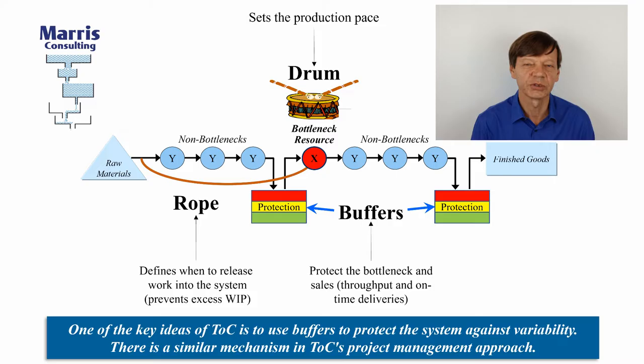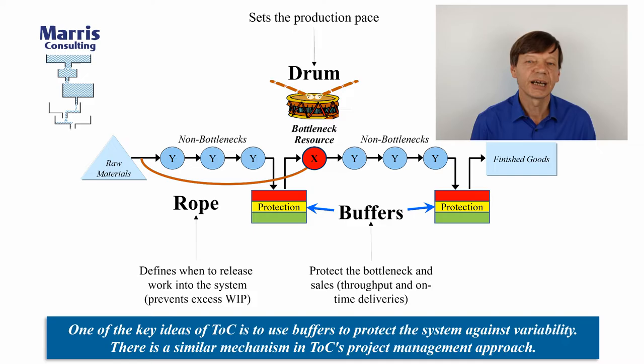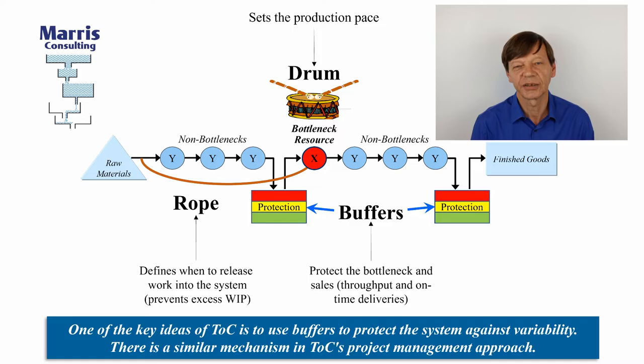If you do that, you have a system with minimum inventory and maximum throughput, but you haven't protected it against uncertainties and variabilities — and this is where the buffer comes in. The buffer is described in time, and you try to get work orders to arrive in front of your capacity constraint with a certain amount of time ahead of when it's planned on the bottleneck — an hour or a day depending on your industrial system — and it will absorb uncertainties, variabilities, and problems.